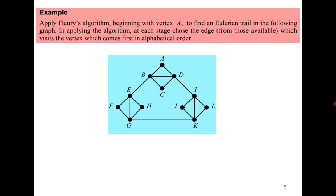Let us consider one more example. Use Fleury's algorithm beginning with vertex A to find an Euler circuit, with the condition that at each stage you choose from the available edges the one that visits the vertex which comes first in alphabetical order. For example, if you are at D and can go to A, B, C, or I, you should go to A first. Imposing this condition guarantees a unique answer.